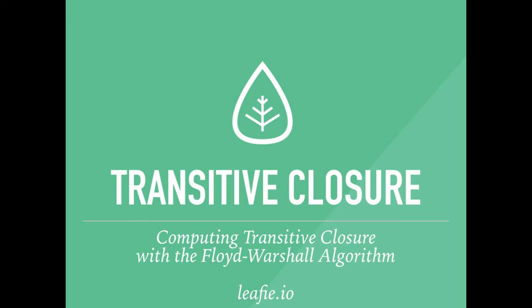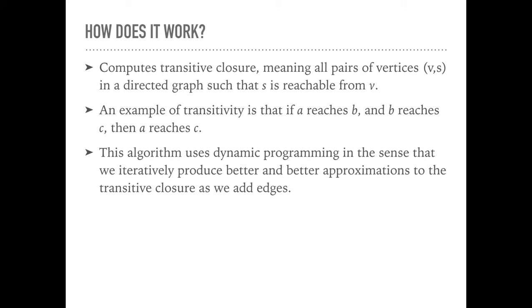We'll go over pseudocode and describe the running time. It computes transitive closure, meaning all pairs of vertices v,s in a directed graph such that s is reachable from v.